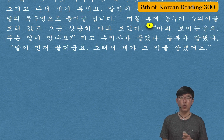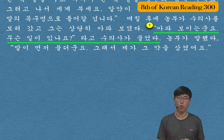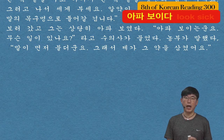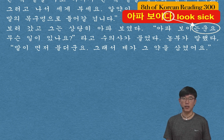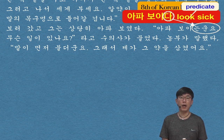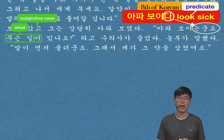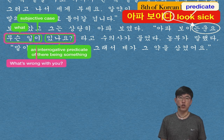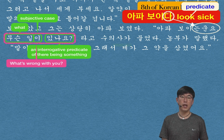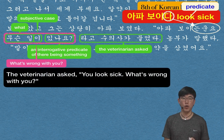The seventh sentence: 아파 보이는군요 무슨 일이 있나요? 라고 수의사가 물었다 — The veterinarian asked: You look sick, what's wrong with you? 아파 보이다 is 'look sick.' When 다 is removed and 는군요 is added, it forms the predicate 아파 보이는군요 — 'you look sick.' 무슨 일 is 'what' (interrogative), 이 is the subjective case, 있나요 is an interrogative predicate for 'there being something,' so 무슨 일이 있나요 is 'what's wrong with you.' 라고 수의사가 물었다 is 'the veterinarian asked.'